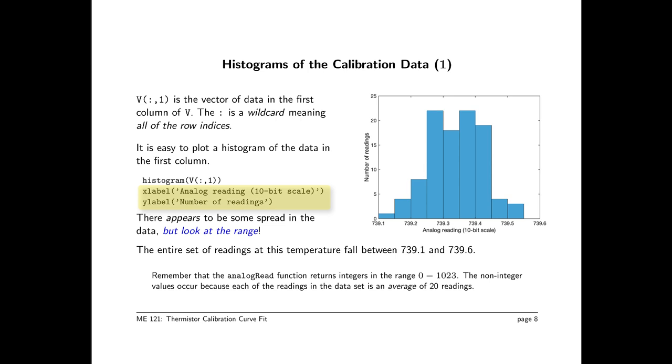The histogram sort of looks good. I mean, there's a big hump in the middle, and it would say, you know, this is not an unreasonable set of data from which to extract a mean. But look at the horizontal axis. The data is extremely narrowly clumped from 739.1 to 739.6. These are analog readings, and the entire analog reading scale is 0 to 1023. So what we have is a very narrow range of data at this particular temperature. Let's look at the other data.